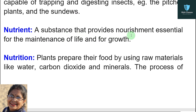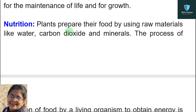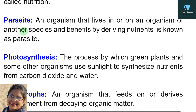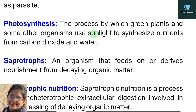Nutrient: a substance that provides nourishment essential for the maintenance of life and for growth. Nutrition: plants prepare their food by using raw materials like water, carbon dioxide, and minerals. The process of utilization of food by a living organism to obtain energy is called nutrition. Parasite: an organism that lives in or on an organism of another species and benefits by deriving nutrients is known as a parasite.